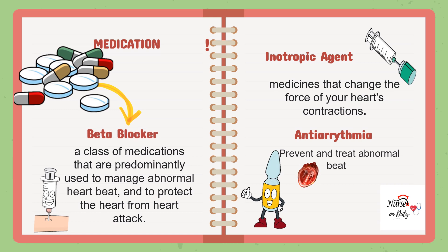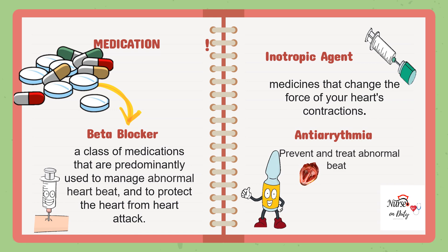Next is the inotropic agent — medicines that change the force of the heart's contraction. In arrhythmias, there could be tachycardia or bradycardia, so to maintain the normal rate of the heart, inotropic agents are prescribed. The last one is the antiarrhythmic drug, which prevents and treats abnormal heartbeat. This type of medication is given for the presence of dysrhythmias or irregularities of the heartbeat, regardless if it is too fast or too slow.